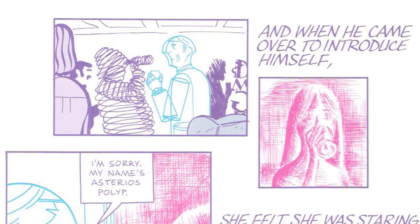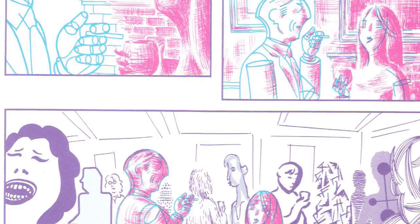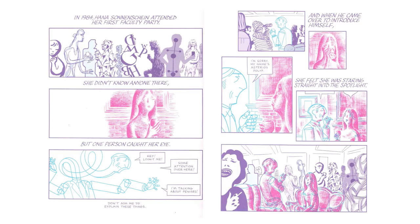He spends that one page establishing the central concept — Hannah and Asterius' very basis of being is unique to themselves, diametrically opposed almost. Then he spends a page showing us how these two forces are able to combine. But before we talk specifically about that, we need to mention the mode in which this works, because Mazzuchelli is building us up to this moment and making sure we understand each part of this sequence entirely before moving on. He actually teaches us how to understand this new visual language he's conveying. At the very start of the book, Mazzuchelli shows us how to read Asterius' world.